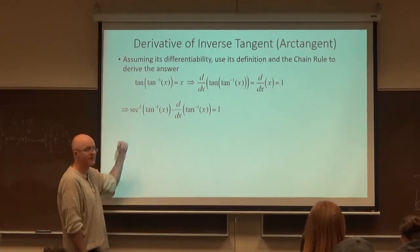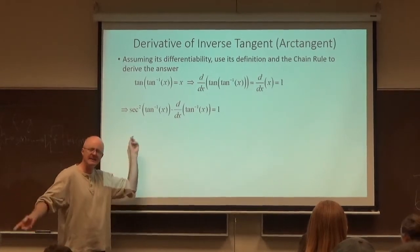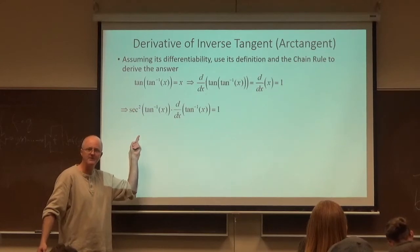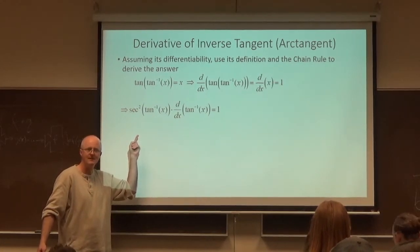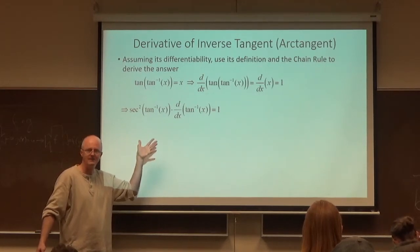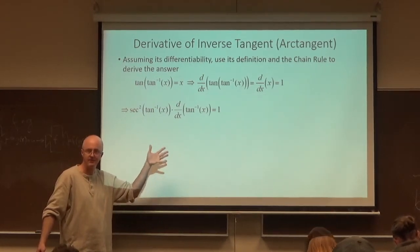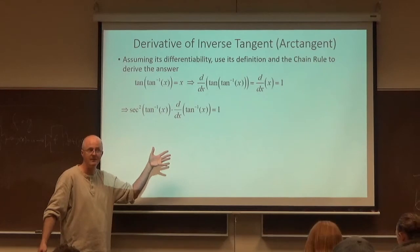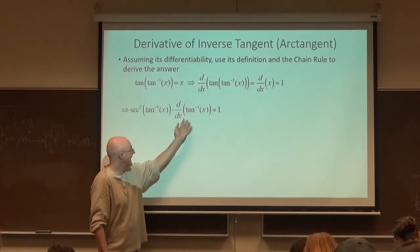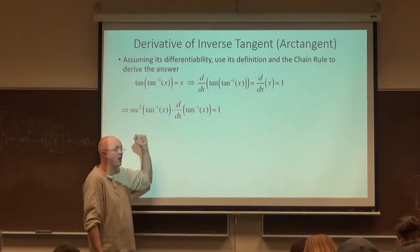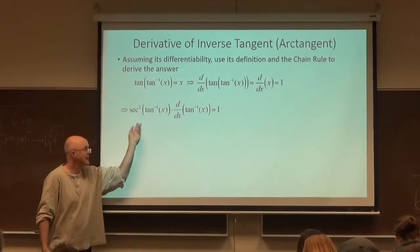The derivative of tangent we saw on Monday, right? It was secant squared. By the way, that's something you should memorize for the gateway and future quizzes. It can be derived, but it's probably worth memorizing the derivative of tangent is secant squared. But I plug in the inside function. Then I take the derivative of the inside function. And I don't know that derivative yet, but now I can solve for it. Divide both sides by this.